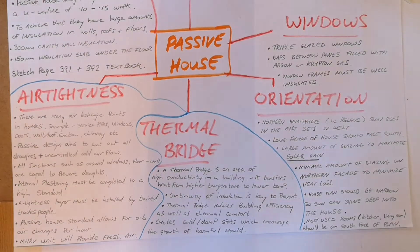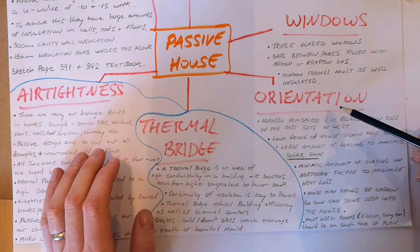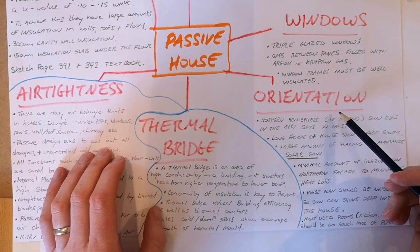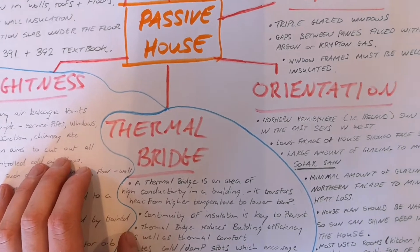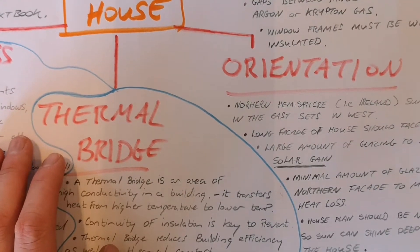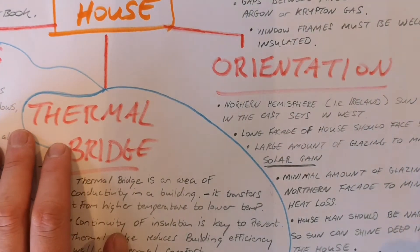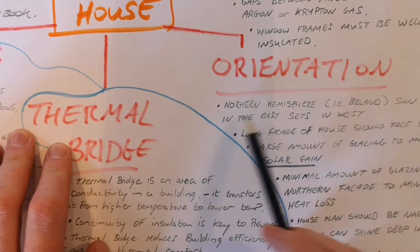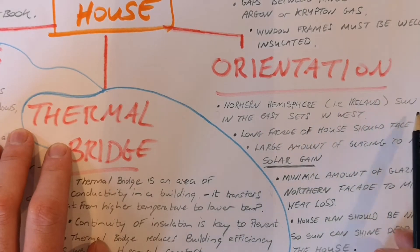Just to continue on with the mind map, a few quick points. I'm going to talk about two more today. First of all, orientation — that's a huge part of passive house design, because it has to use the heat from the Sun to heat the house. It's massively important. In the northern hemisphere, for instance Ireland and all of Europe, the Sun rises in the East and sets in the West.